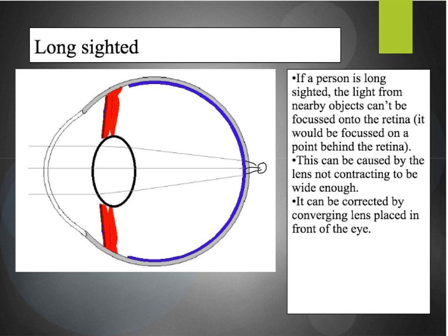As the light cannot be fully focused, the image will appear blurry. This is caused by the lens not contracting to be wide enough, so instead of being fat as it should be, the lens is too thin. This can be corrected by placing a converging lens in front of the eye, whereby the light rays will already be converging onto the lens before being converged further so that they end up focused on the retina.